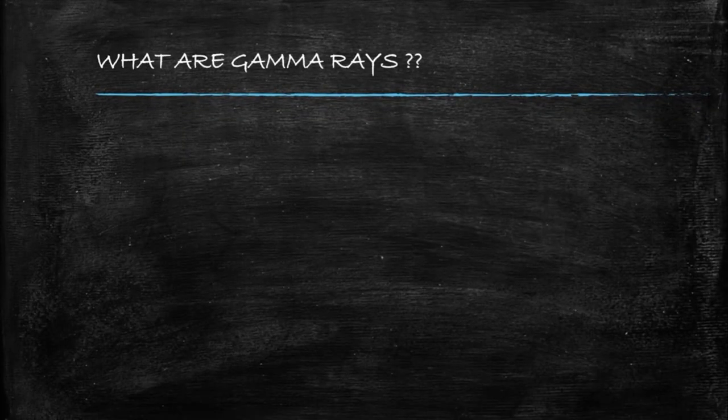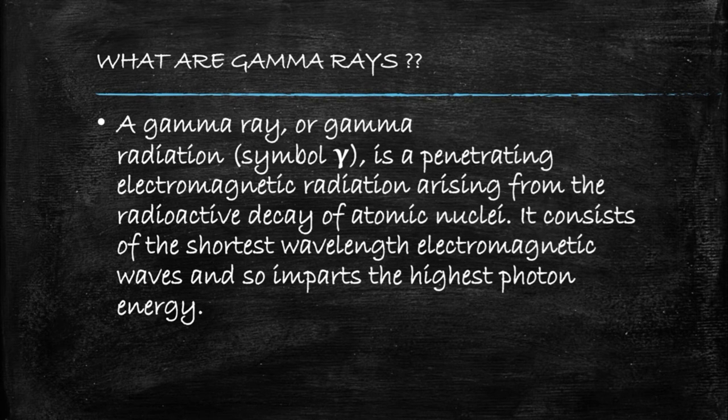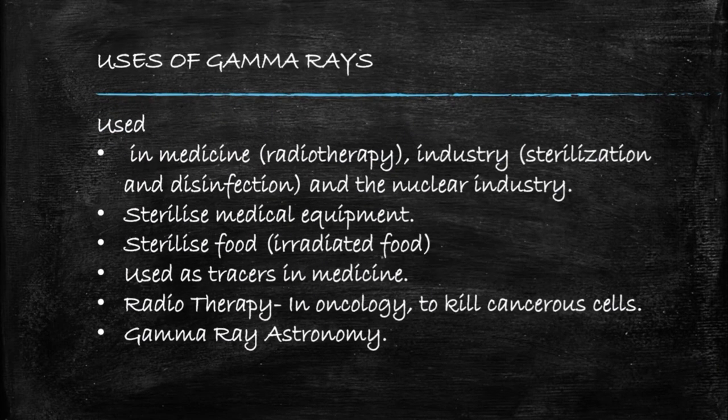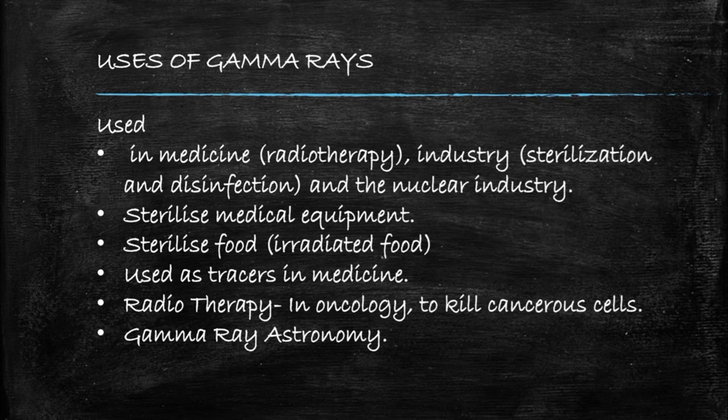Now let's see about gamma rays. Gamma rays arise from the radioactive decay of atomic nuclei. They have the shortest wavelength and hence impart the highest photon energy. The spectrum range of gamma rays is greater than 10^19 Hz. Some of the uses of gamma rays are in medicine, industry, and nuclear industry. They are also used in sterilizing medical equipment and food.